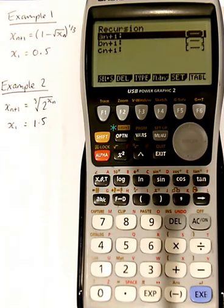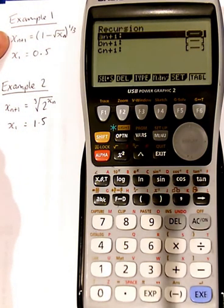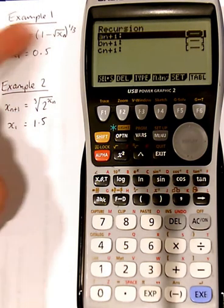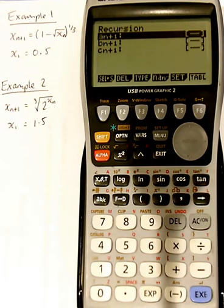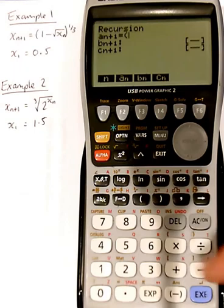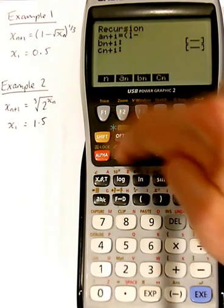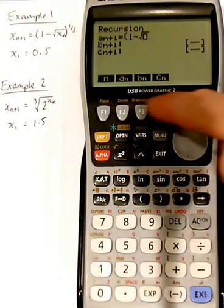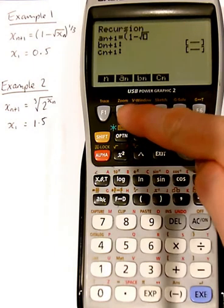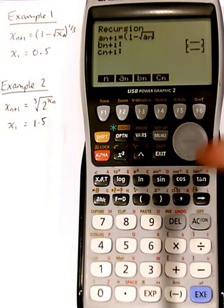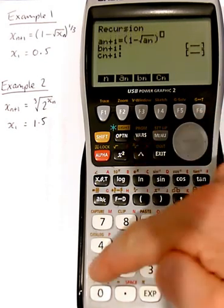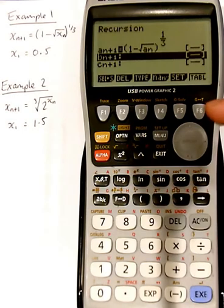So we start by typing in the formula. On Mrs. James' example, we have xn+1 and xn. So we're just going to replace the x with an a. So we need to do 1 minus the square root of, and you can see here just above F2, we can use an. I'm going to go outside the bracket, and we need to raise that to the power of 3. So there's our formula.